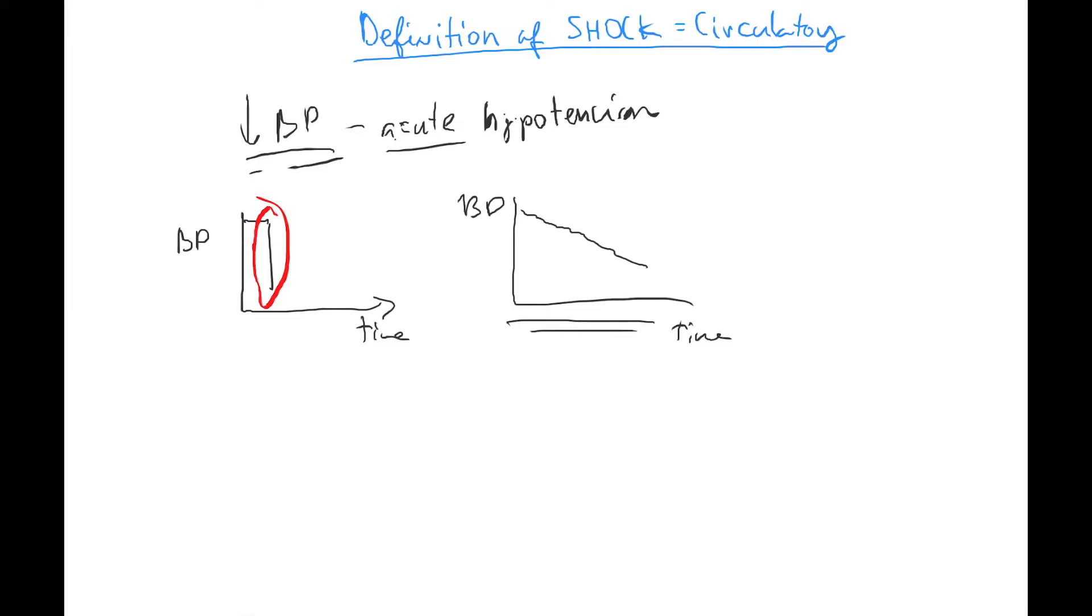It's ischemia, okay. But now it's not local as we talked in case of MI or stroke, or if it's only ischemia, it's transitory ischemic attack of the brain, and you got a video on that also on Kenhub.